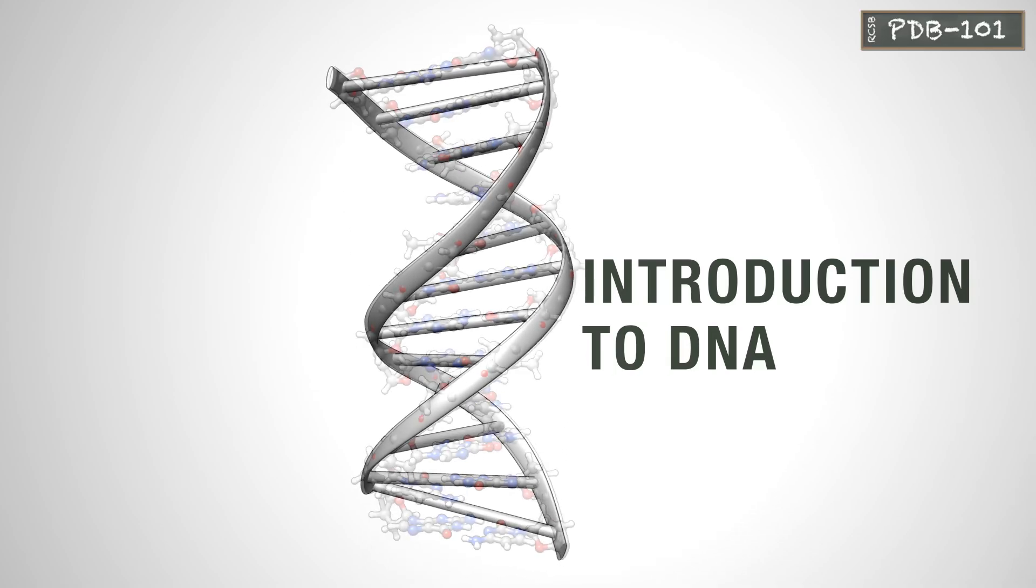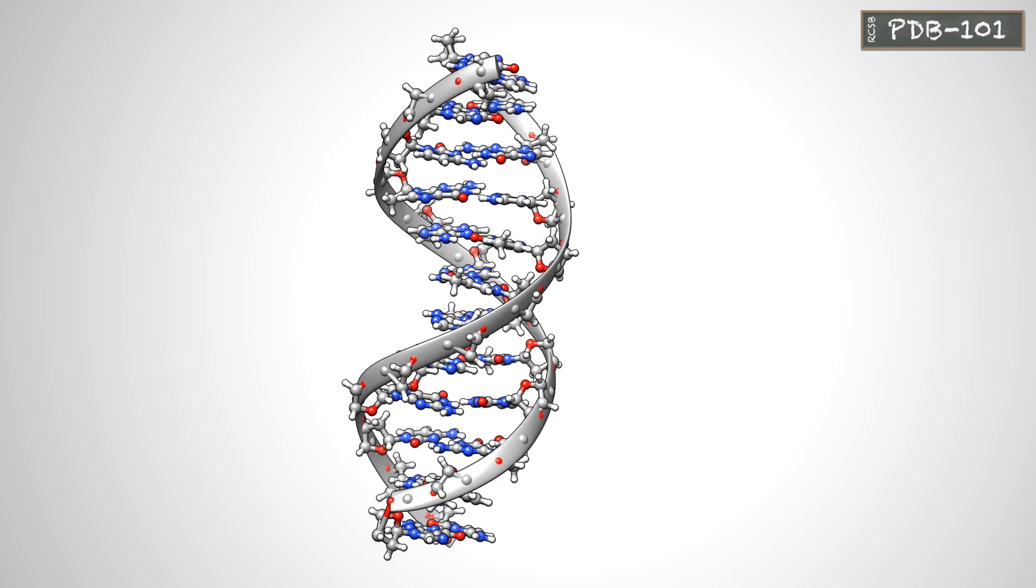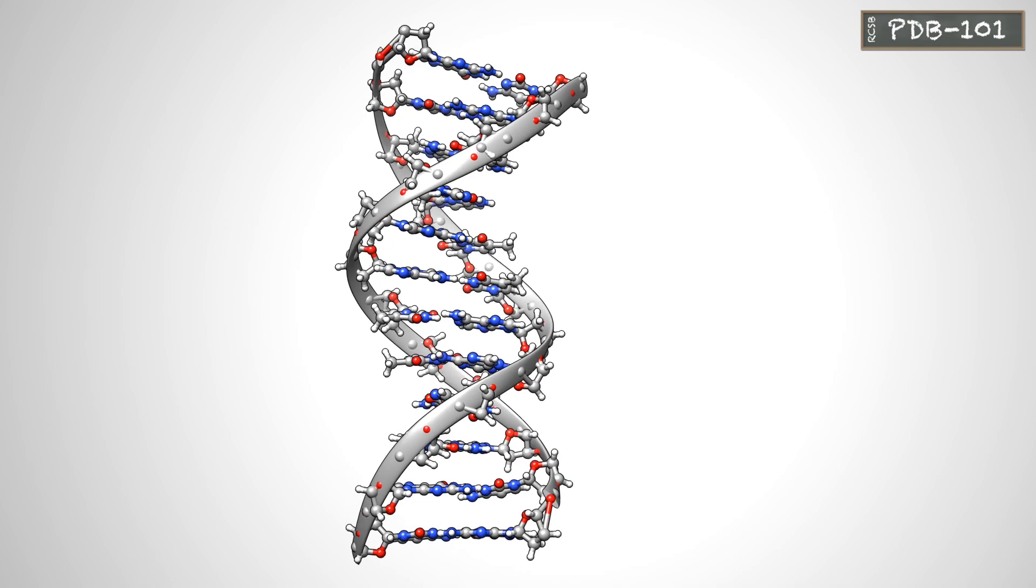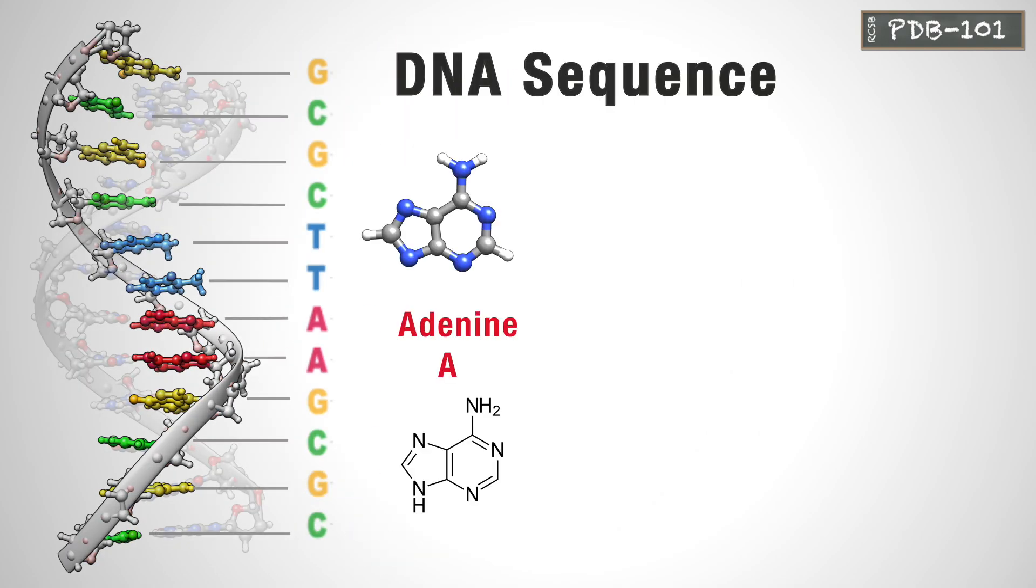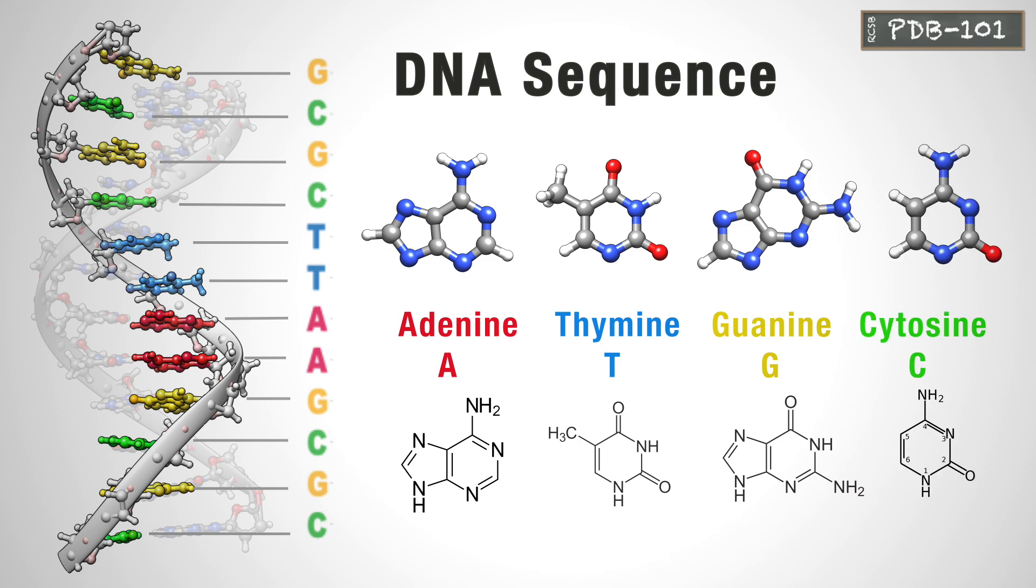DNA is perfect for the storage and readout of genetic information. This information is stored in the sequence of adenine, thymine, guanine, and cytosine, also called A, T, G, and C.